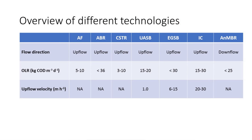In this final table you see the different technologies compared with each other. The anaerobic filter and the anaerobic baffled reactor are outside the scope here but are included for completeness. You can see a CSTR, a UASB, an EGSB, an IC, and an AnMBR. They each have either an upflow or downflow configuration. Depending on the technology, there is a different organic loading rate — some can take a higher loading rate than others — but the more intensive the process is, there's always a price tag associated with that.